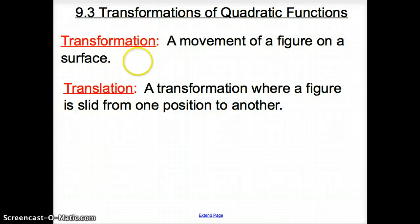A transformation is a movement of a figure on a surface. And that surface could be the coordinate plane. The coordinate plane is what we've been dealing with for the past couple days, where it's the x-axis and the y-axis, and we've been graphing parabolas on them. The next vocab word is a translation. A translation is a type of transformation where the figure is slid from one position to another.